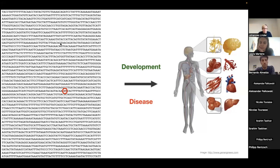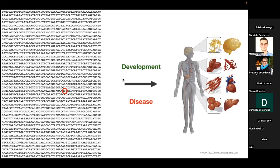Our genome contains all the information to generate all our different cell types with different morphologies and functions. Perturbations in the sequence are also the cause of many diseases. So understanding how the information encoded in the genome drives this diversity of cell types is very important to understand both development and disease. My main exciting aspect is to understand the code of the genome and in particular the regulatory code.